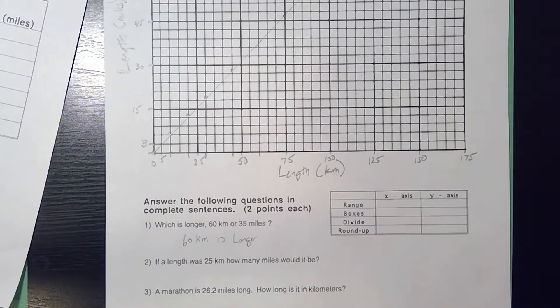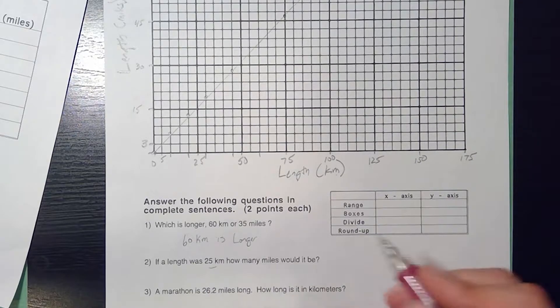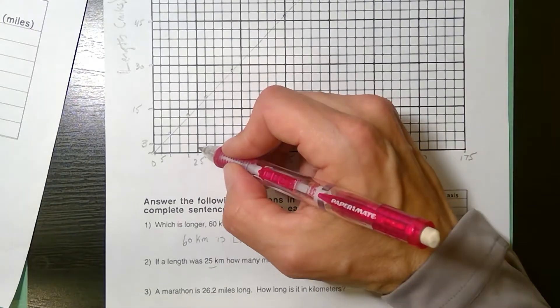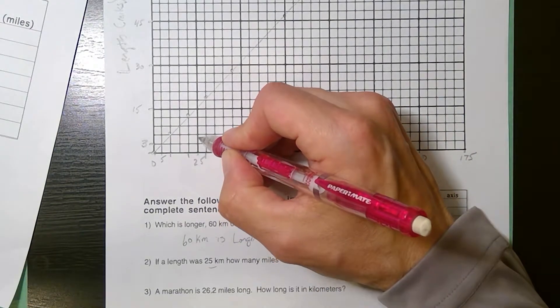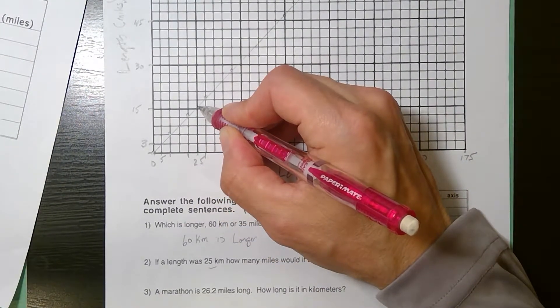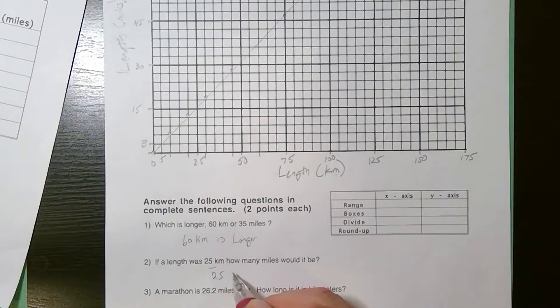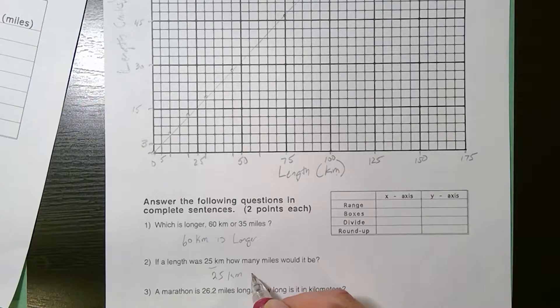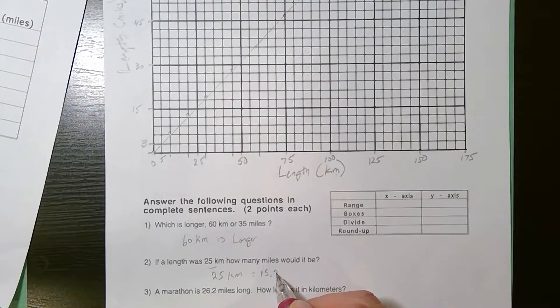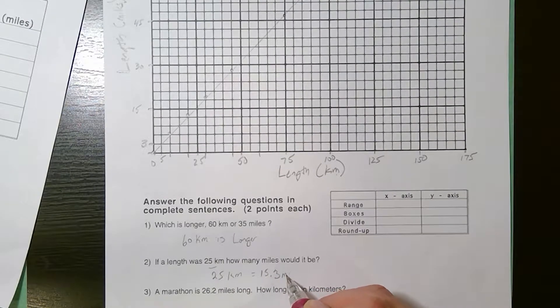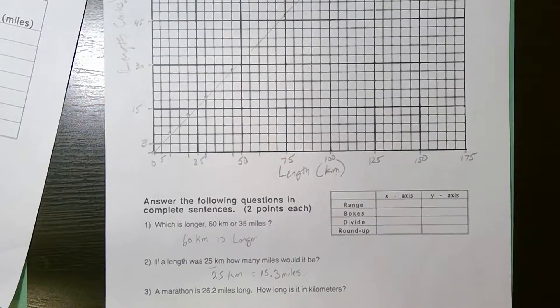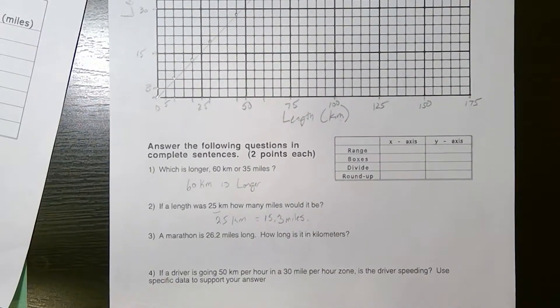25 kilometers. Since I know the kilometers, I just read up and across to get miles. This is 15. I'm seeing that it's slightly higher. So 25 kilometers might equal 15.3 miles. If I had a formula, I could convert it.